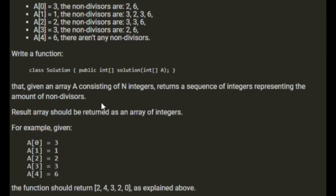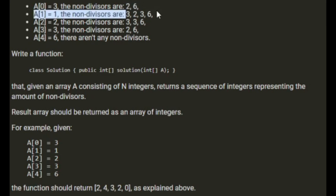Write a function that, given the array A consisting of N integers, returns a sequence of integers representing the amount of non-divisors. So for example, given [3, 1, 2, 3, 6], the function should return 2, 4, 3, 2, 0, as there's 2 there, 4 there, 3, 2 and 0.